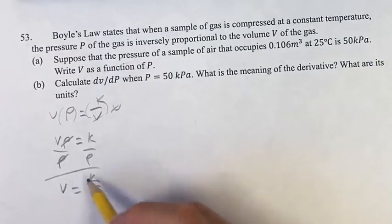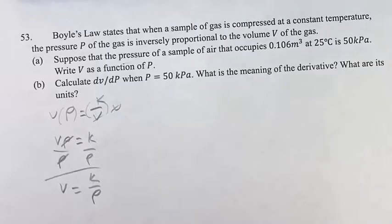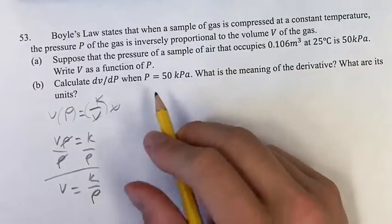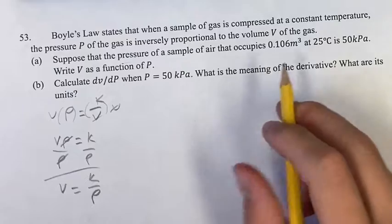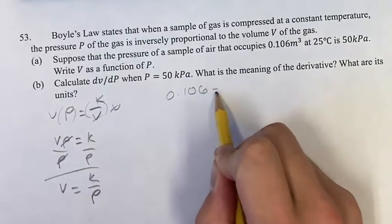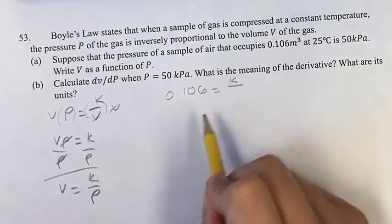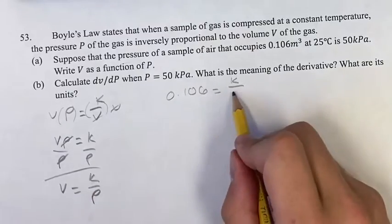Now we want to solve for K. We know V is the volume, so 0.106 equals K, which we don't know yet, divided by P, which is 50 kilopascals.